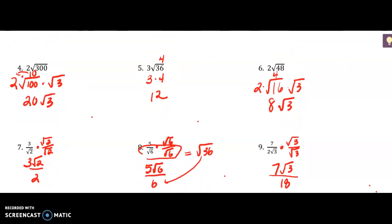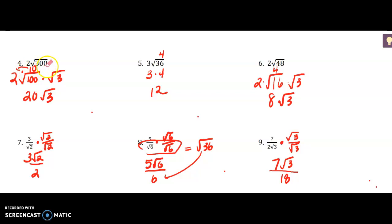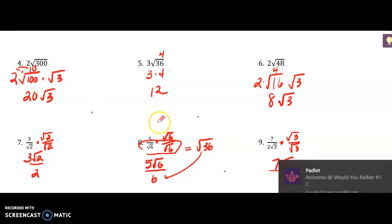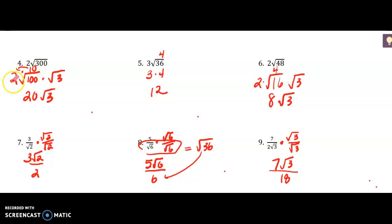Number 4 says 2 times the square root of 300. Remember that 2 out front is going to get multiplied by whatever I simplify. I broke down 300 into the square root of 100 times 3. The square root of 100 is 10, and then you multiply that 10 by 2 to get 20, so you have 20 square roots of 3. Number 5: the square root of 36 is a perfect root that gives you 4, so you just multiply 3 and 4 to get 12.